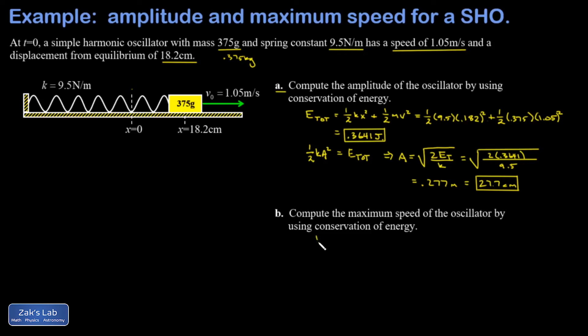We just write down one half m vmax squared, that's the kinetic energy at that moment, is equal to the total energy in the oscillator, which again would be 0.3641 joules. We can solve for vmax symbolically: multiply by 2, divide by m, and square root the results. We plug our numbers in.